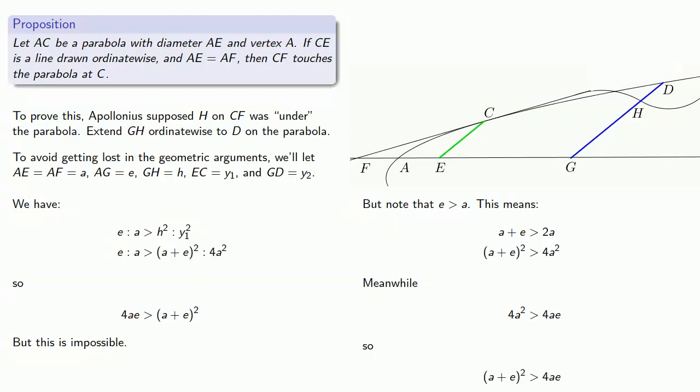And that means this line can't drop under the parabola. And a similar proof shows that the line will not sneak under the parabola before it arrives at the point C.